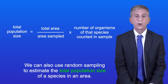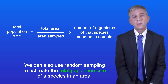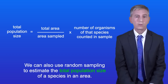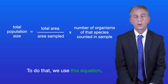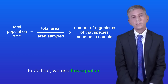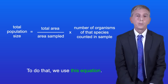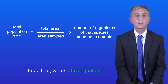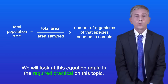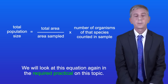We can also use random sampling to estimate the total population size of a species in an area. To do that we use this equation: the total population size equals the total area divided by the area sampled, multiplied by the number of organisms of that species counted in our sample. We look at this equation again in the required practical on this topic.